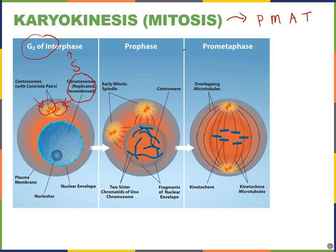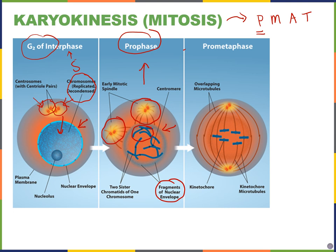The first phase of mitosis is prophase. In prophase, the nuclear envelope begins to break down — you can see only fragments. Chromosomes condense so you can see distinct structures, spindle fibers start coming out of the centrosomes, and the centrosomes migrate to opposite poles of the cell. The next phase is pro-metaphase, between prophase and metaphase, where chromosomes continue to condense further and are easier to see under the microscope.